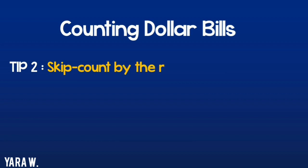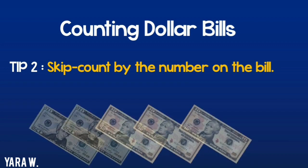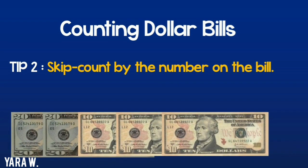Tip number 2. Skip count by the number you see on the bill. Look at this example. I will start by 20, and then 20 again, so I'll skip by 20, it will be 40.